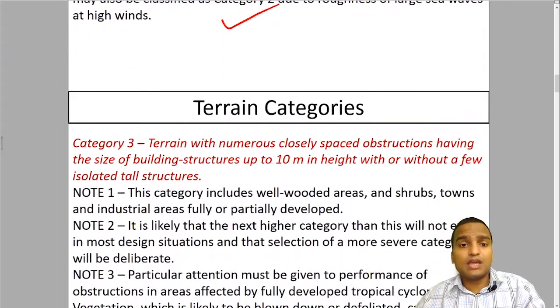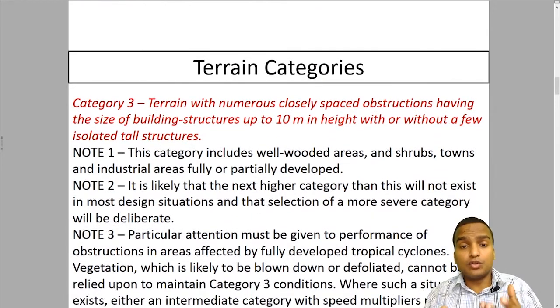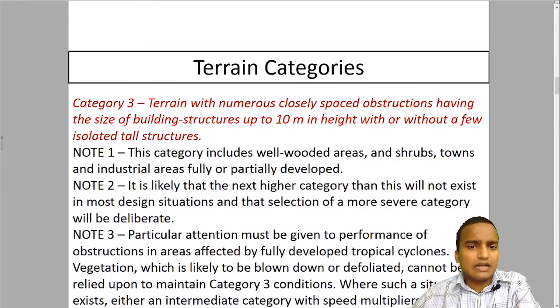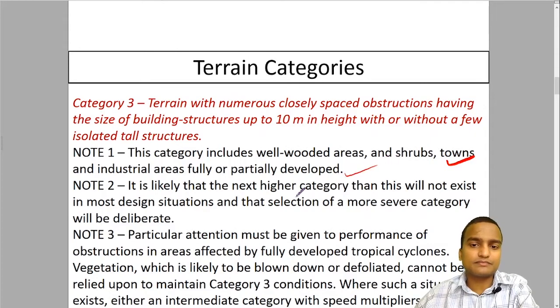Terrain category 3 are those terrains where numerous closely spaced obstructions. Like in the towns and cities, obstructions are very closely spaced, having the size of building structure up to 10 meter in height with or without a few isolated tall structures. About three floor buildings can come in the range of 10 meter height buildings. This category includes well-wooded areas, shrubs, towns and industrial areas fully or partially developed.